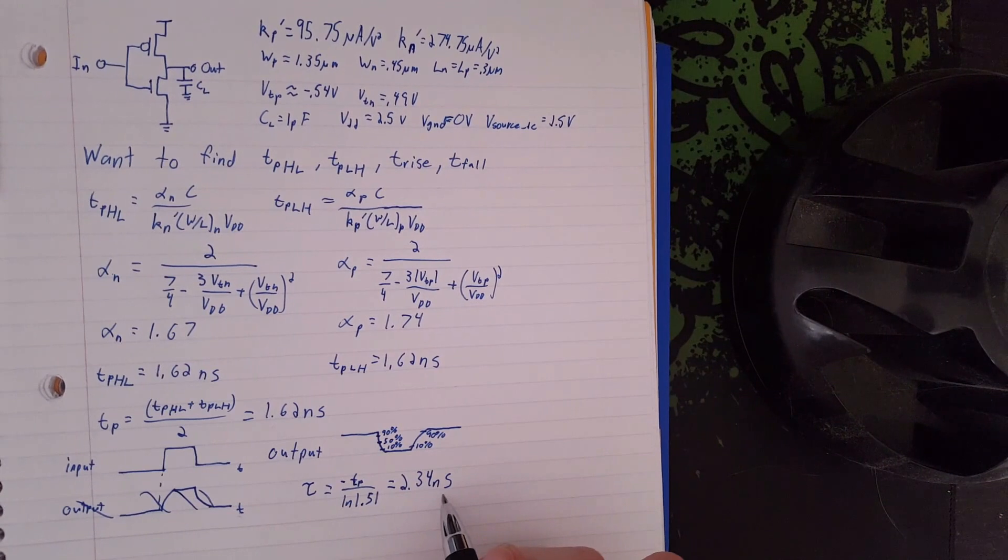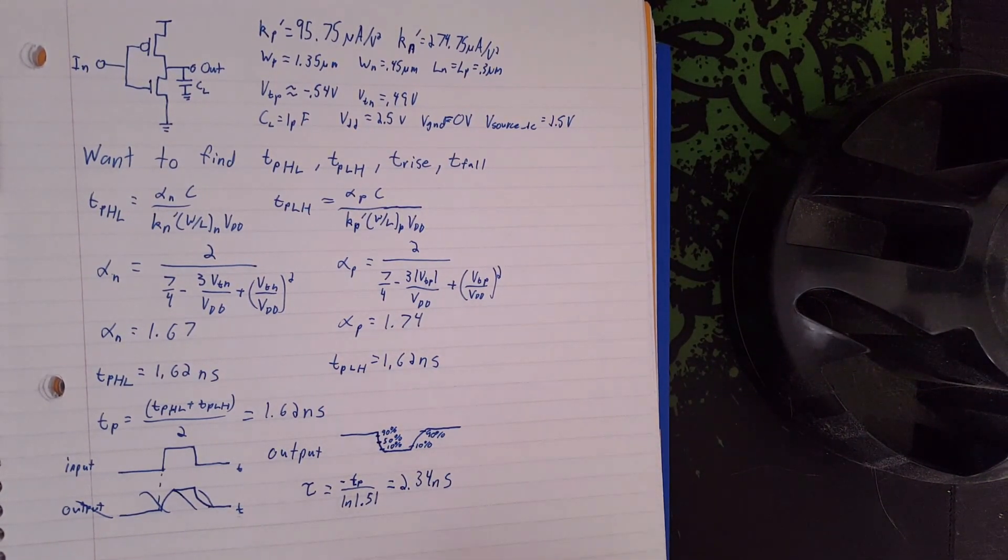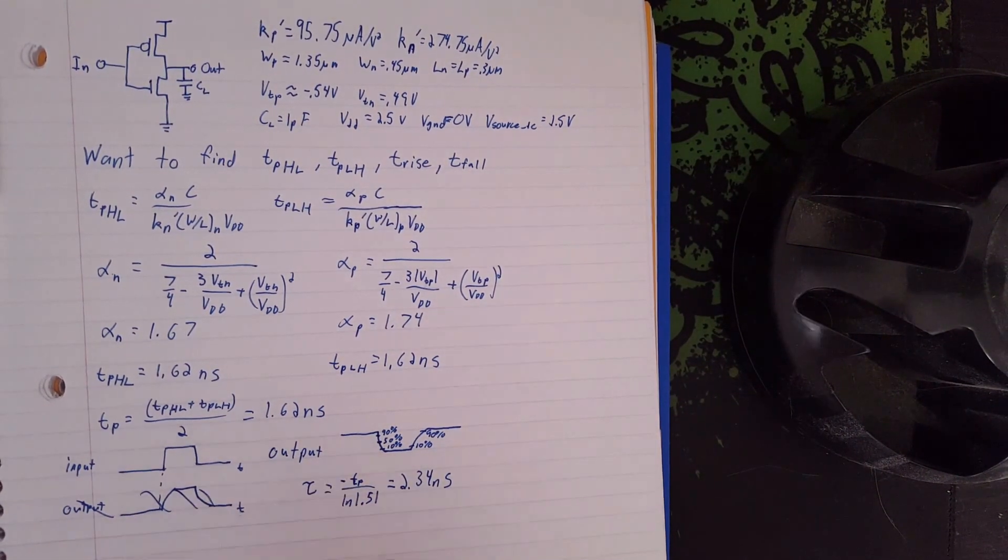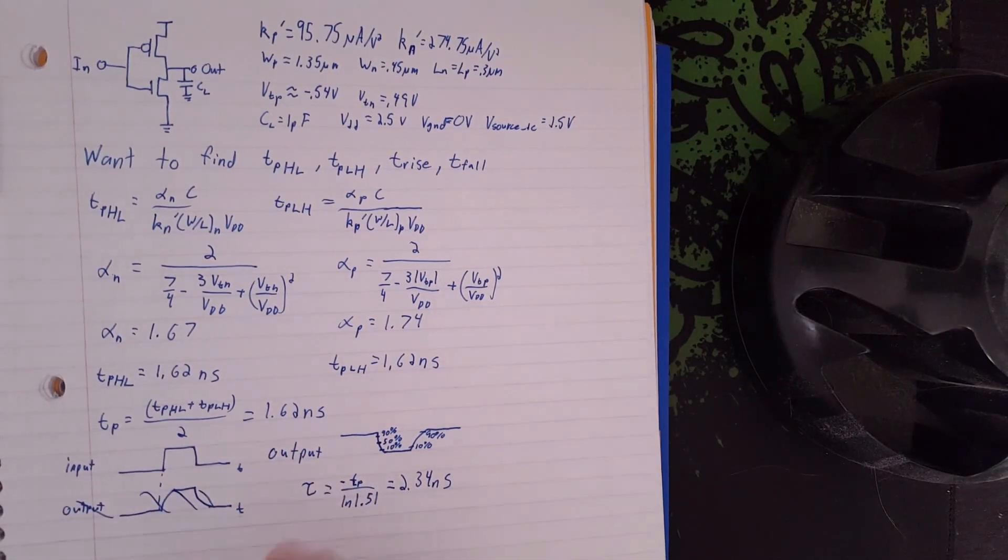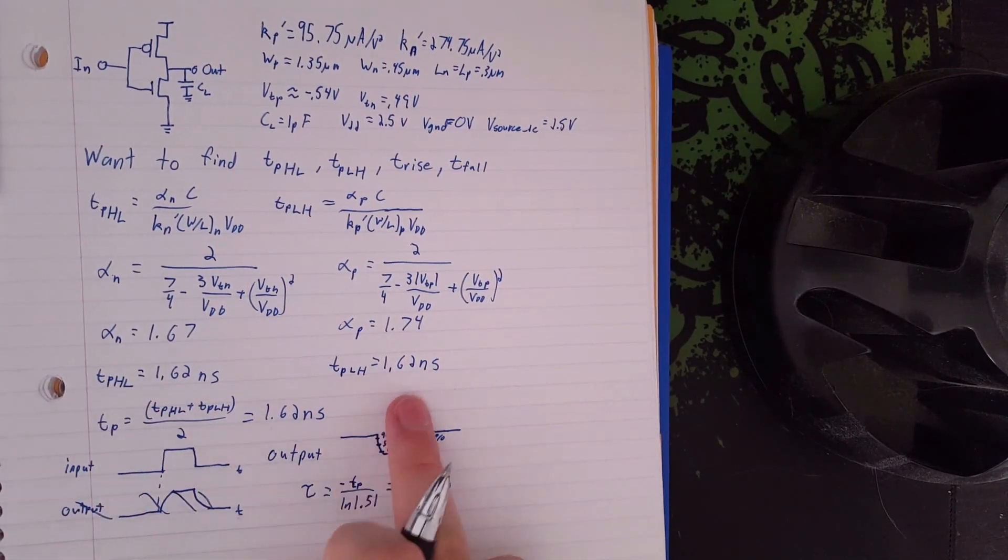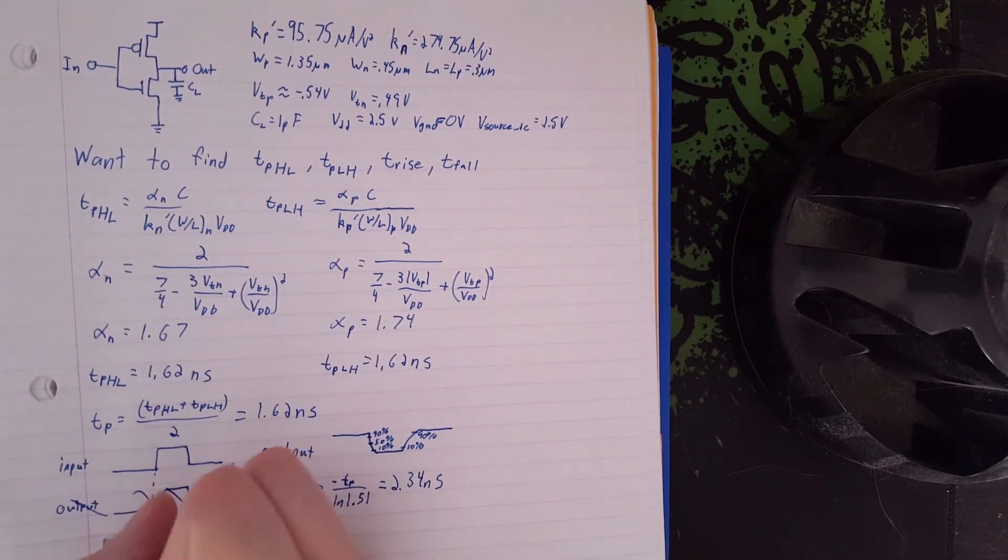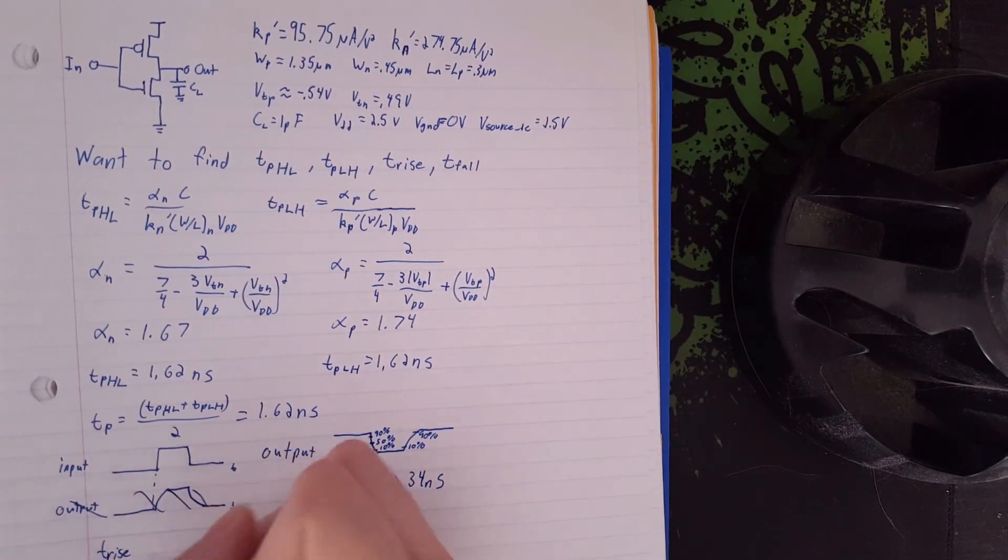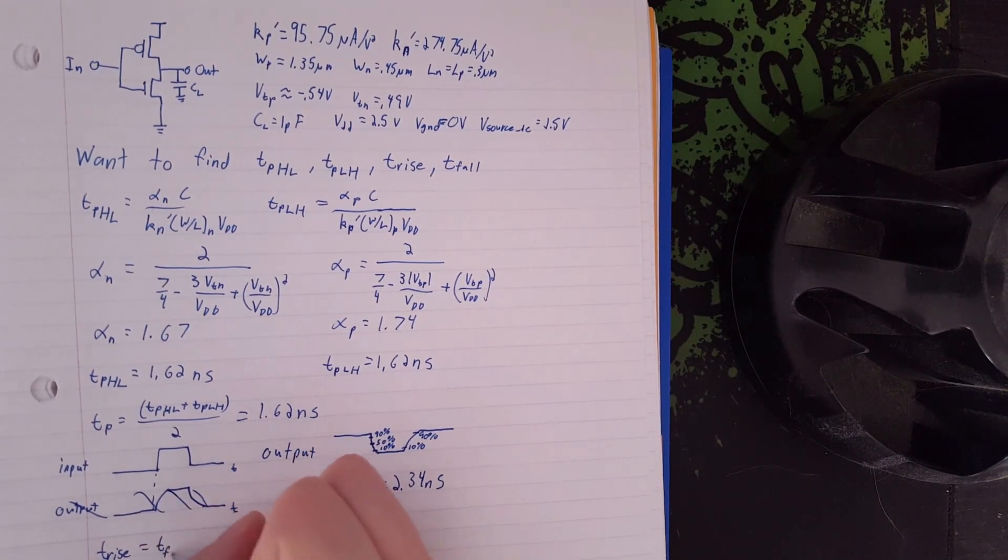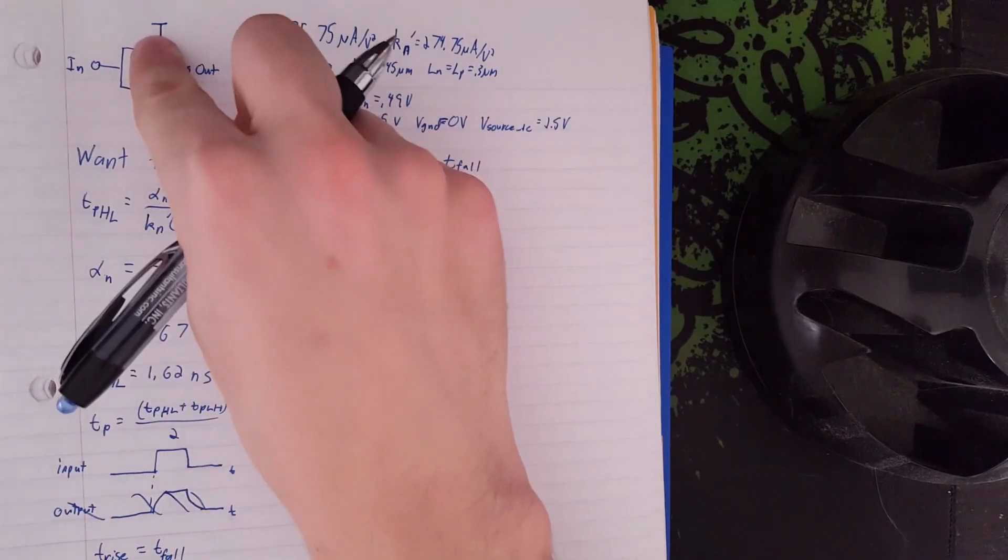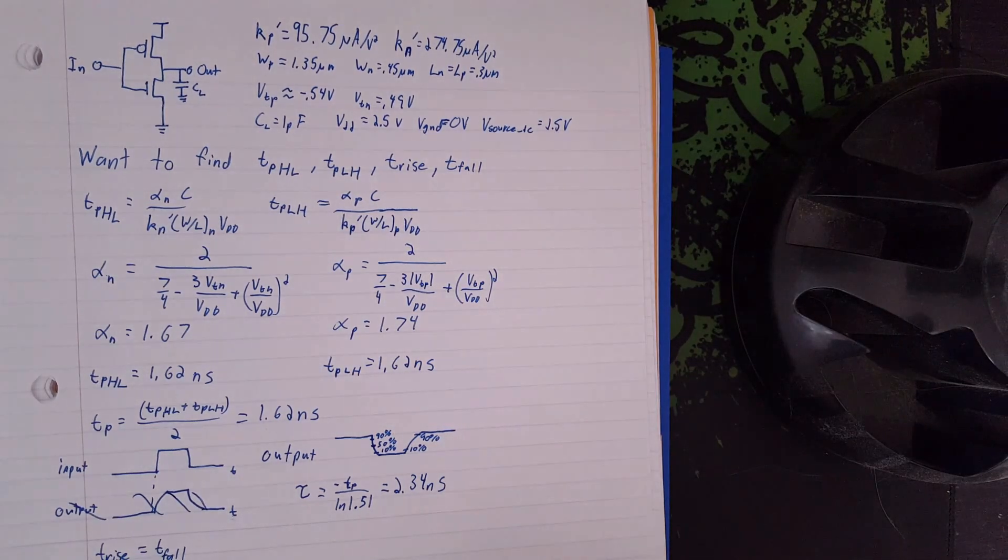Then using this tau, we can find our rise time and fall time by using more natural log equations. Because our TPHL and our TPLH are equal to each other, we can say that our rise time is going to equal our fall time because our PMOS and NMOS are matched. So they'll show the same characteristics.